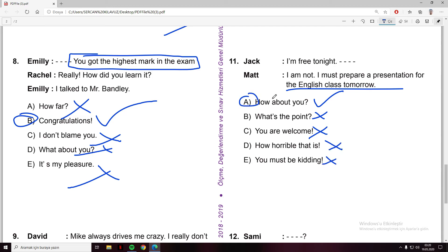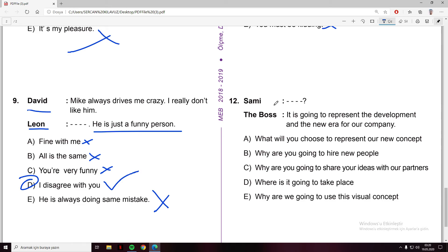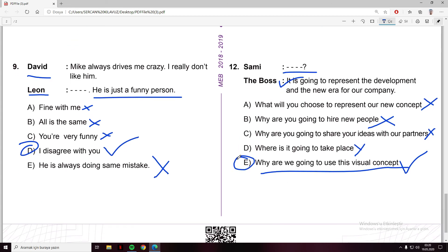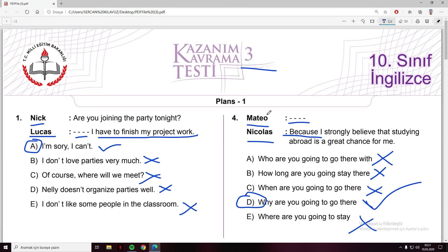Final question: Sammy asks a question. The Boss answers: it is going to represent the development and the new era for our company. What will you choose to represent our new concept - no. Why are you going to hire new people - no. Why are you going to share your ideas with our partners - no. Where is it going to take place - no. Why are we going to use this visual concept - it's going to represent the development and the new era for our company. The answer and the question fit, this is option E. This is the end of our third session and third test. Thank you for watching and listening, goodbye.